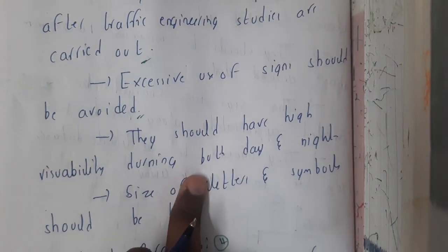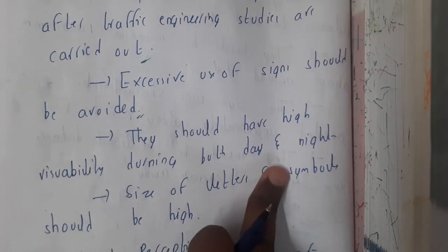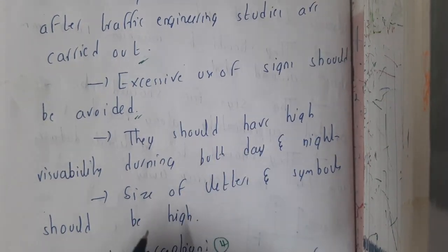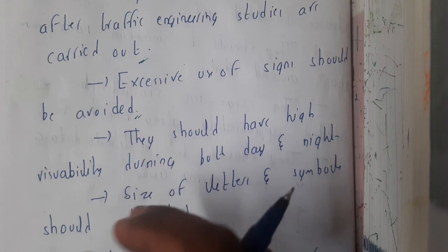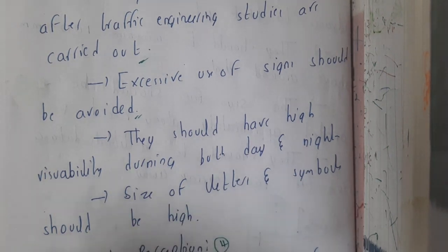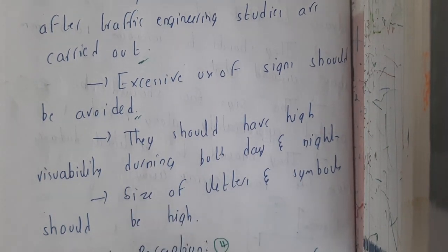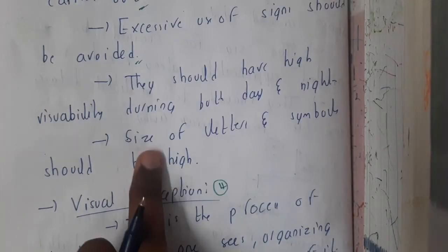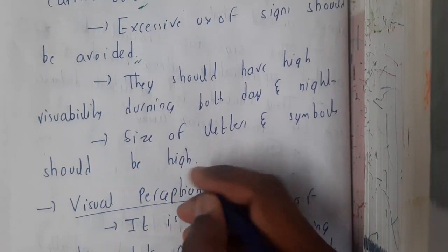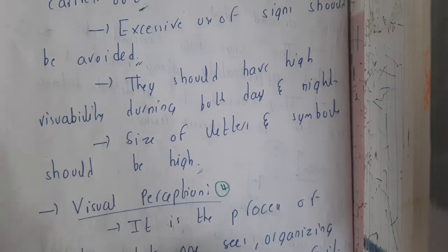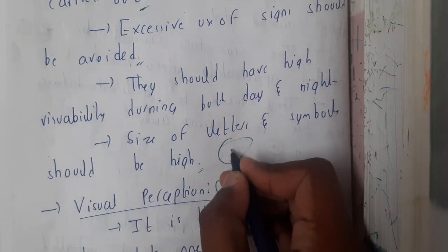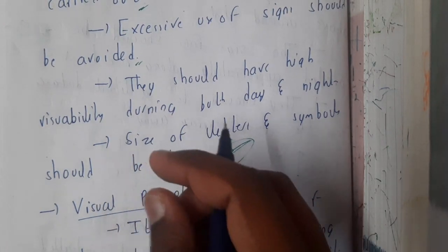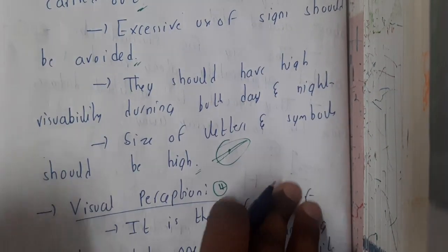Signs should have high visibility during both day and night. That is the reason why they are coated with radium — whenever headlights reflect on them at night, they will shine. Similarly, the size and letters of the symbols should also be large enough. For example, for a no parking sign, the text should not be too small and a strike should not cover it.